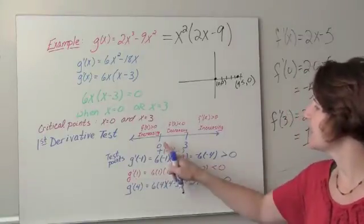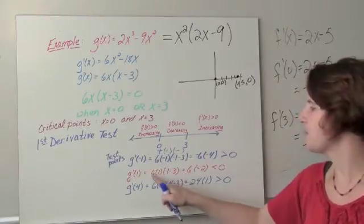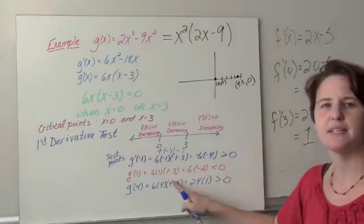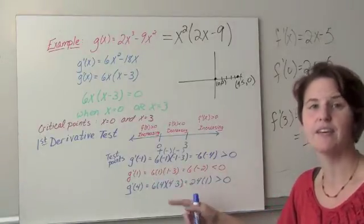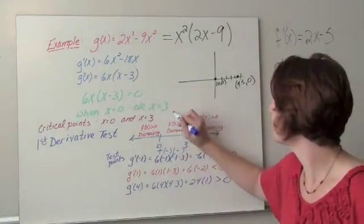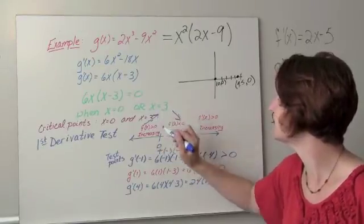If I plug in a number between 0 and 3, like the number 1, I'd have a positive 6 times a positive 1 times a negative 2. Positive times positive times negative is negative. So I know that we are decreasing in this region. And I forgot to draw an increasing here.